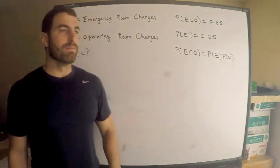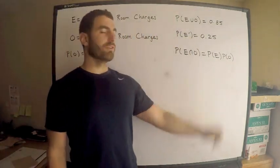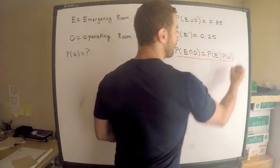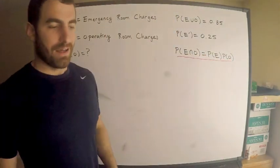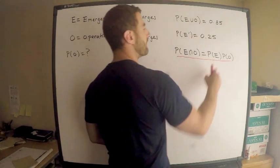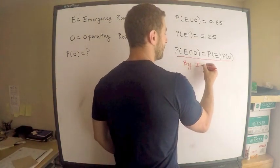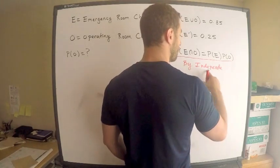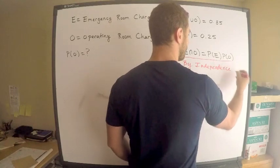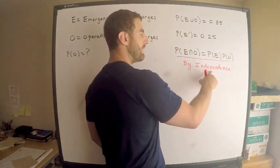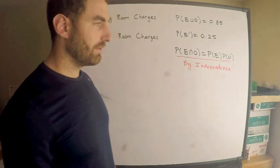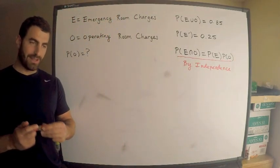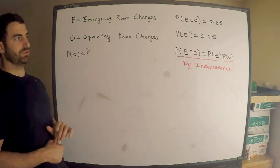We're also given that emergency room charges and operating room charges are independent. That means, as usual, that the probability that they both occur is equal to the probability that the first occurs times the probability the second occurs — by independence. Now let's answer the question: what is the probability that we get an operating room charge?